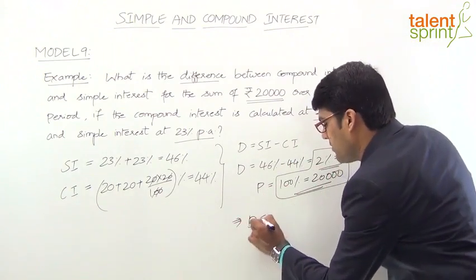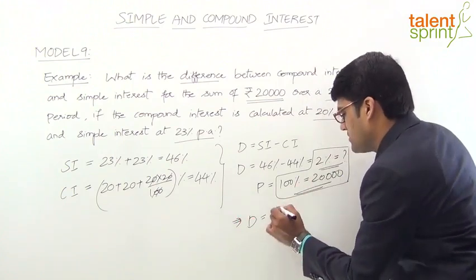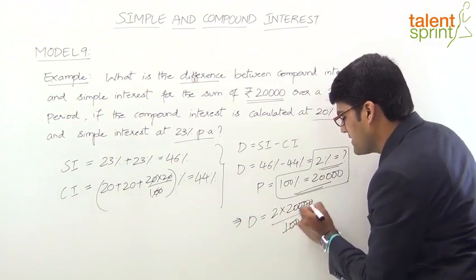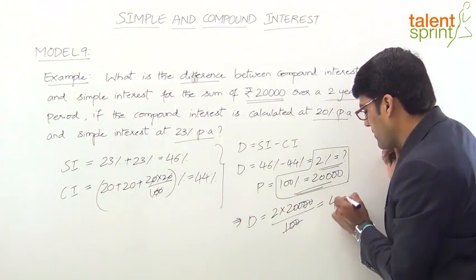Cross multiply it. So 2 into 20,000 divided by 100. Zeros cancel, 2 into 200, 400 is the answer.